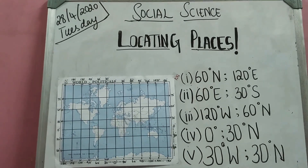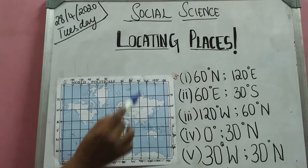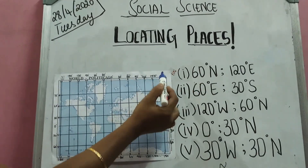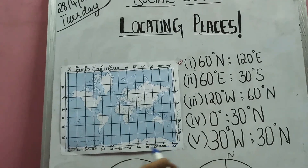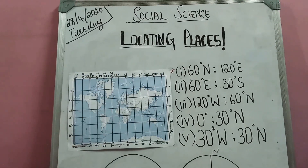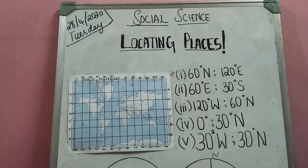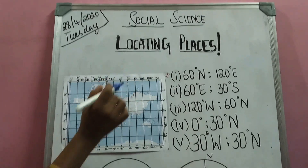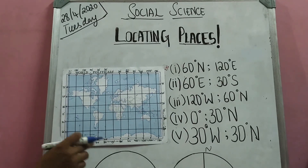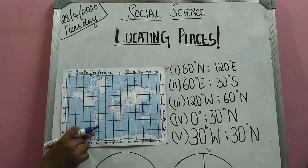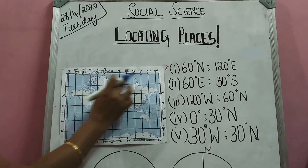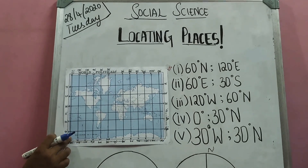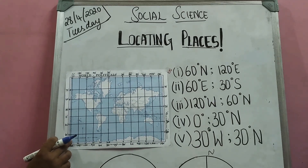Today, we will see about locating places using the grids on the world map. Last class, we learnt about locating places in the grid. So today, with the help of the grid, we will locate the places on the world map using the same method we learnt yesterday.